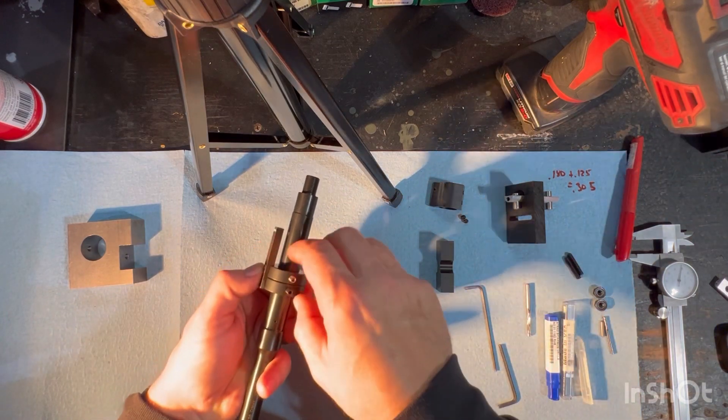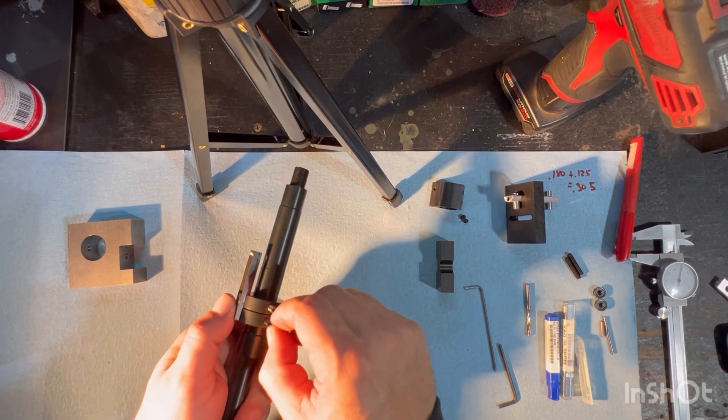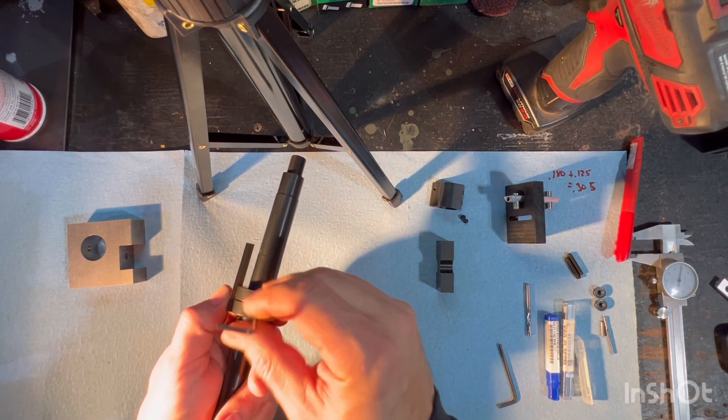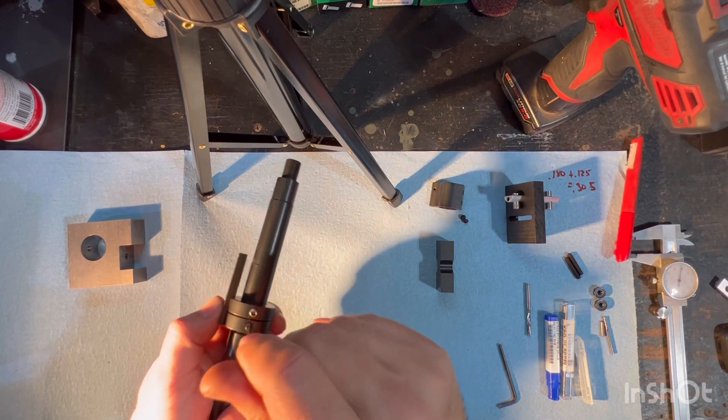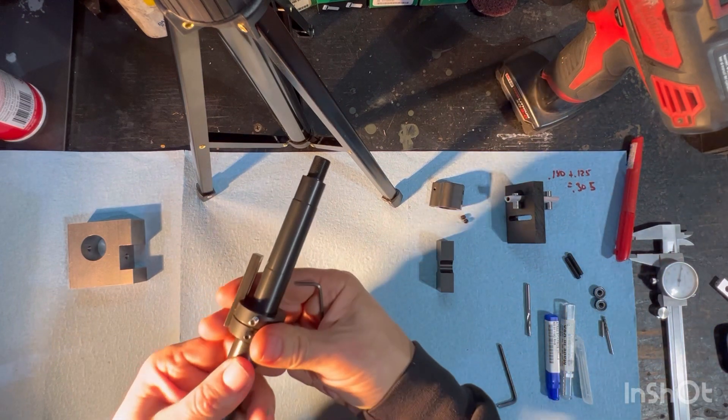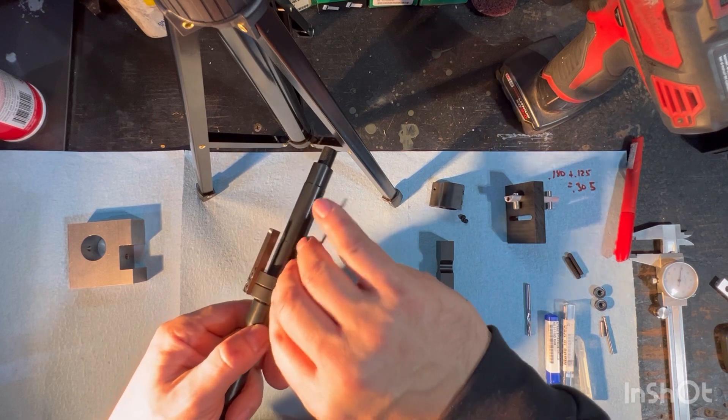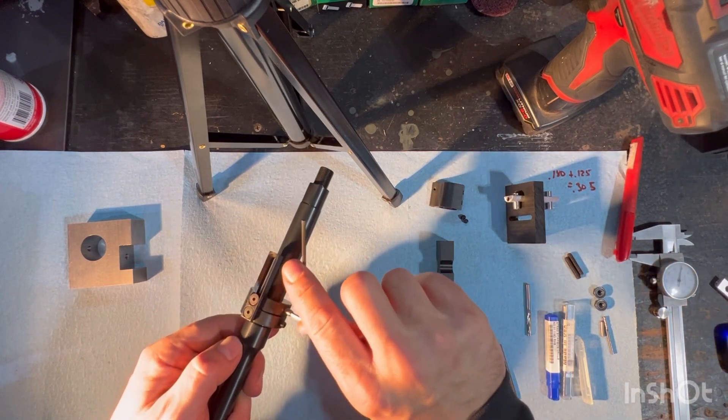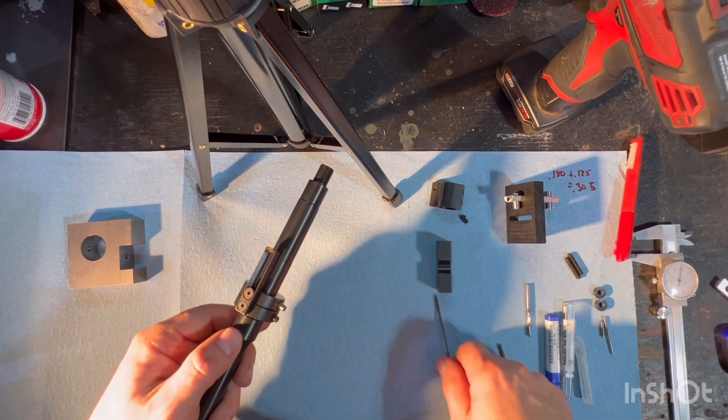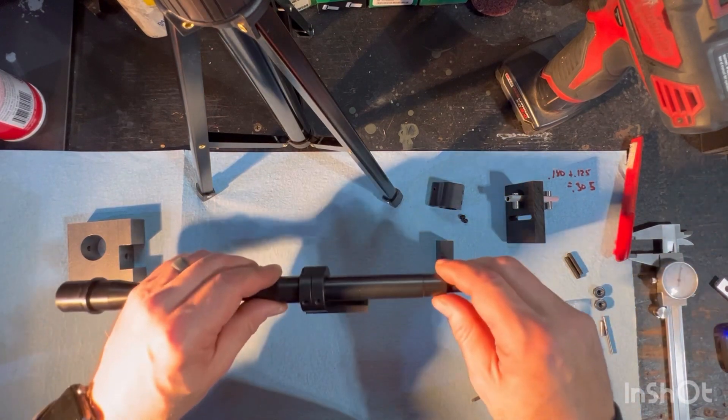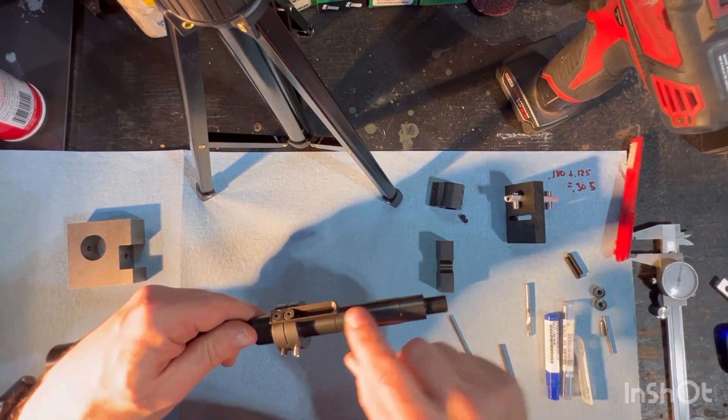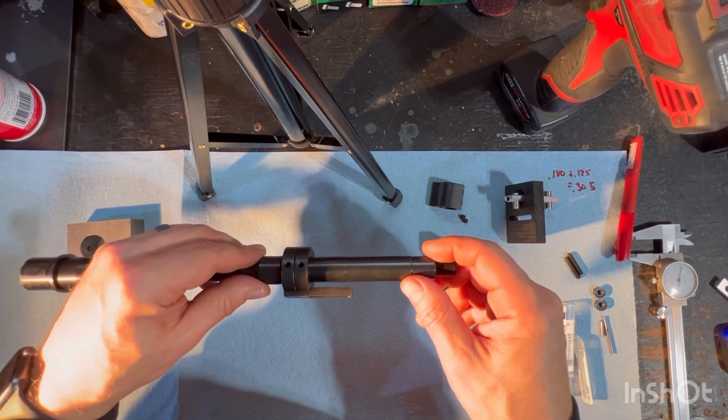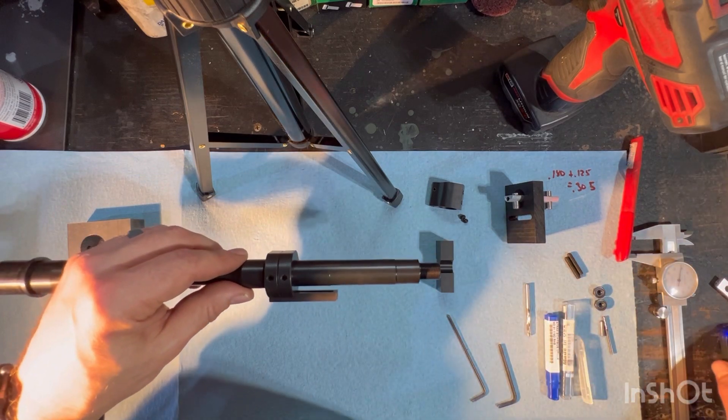The black set screw is a pointed set screw which will index off this gas port. Get that locked on there. And our silver set screw is a soft point, plastic soft point, to snug that up with. In this case, being that this is a nitrated barrel, we'll use a carbide drill and we'll cut our dimples.